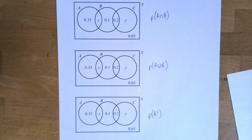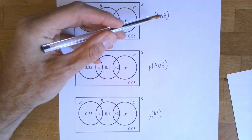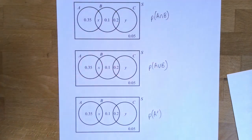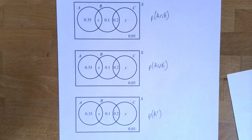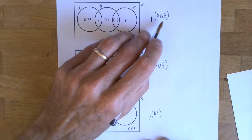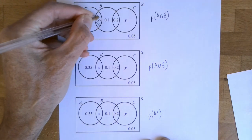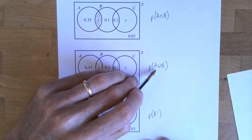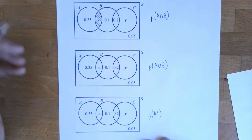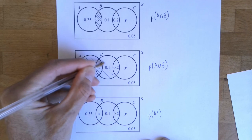I just want to use that question to recap the Venn diagram notation we need to be familiar with. These two look very similar but are very different. We call this A intersection B — that's that bit of the diagram — and we call this A union B, which is everything in A and B combined.